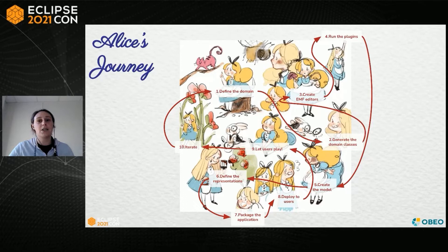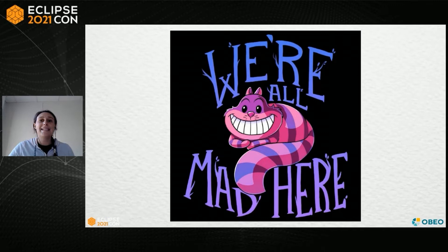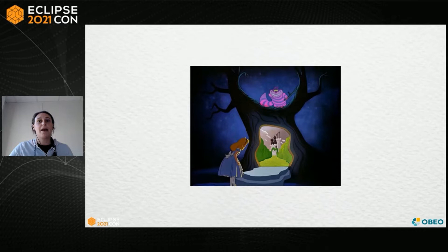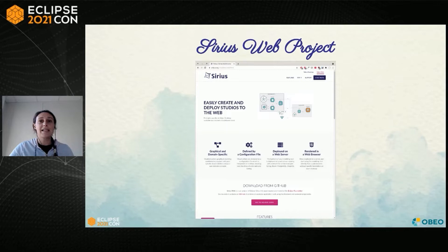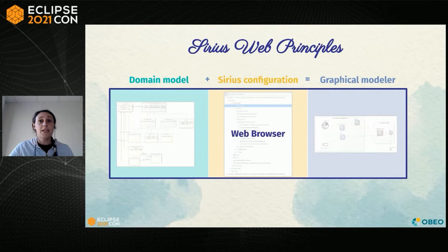One day, Alice shared her situation with her friend, the teacher cat. Alice said, 'I am going mad. Would you tell me please which way I ought to go from here?' The teacher cat answered, 'That depends a good deal on where you want to get to.' Alice prayed for a framework to easily create and deploy her studios to the web. The cat proposed to Alice to try a new framework named Sirius Web. With Sirius Web, Alice can create graphical editors deployed to the web. Alice does not need anymore to use Eclipse for the domain definition and the Sirius configuration. From today, she can do everything from her browser.